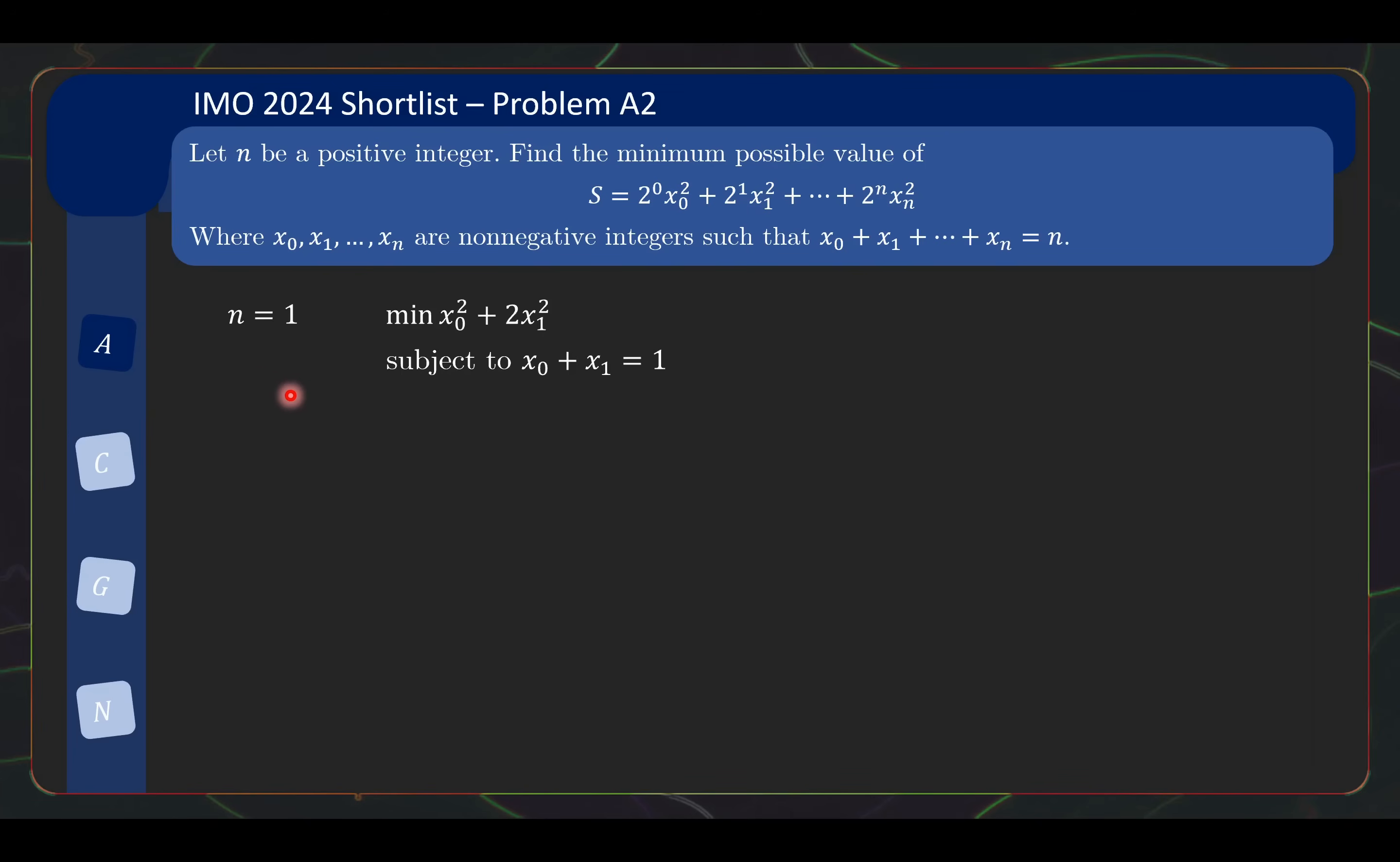When n=1, you have basically this problem. There's only two options: 1,0 or 0,1. You can just try both or remember that it must be non-increasing, so the answer is 1. For n=2, it looks like you have more options, but by the observations earlier, 2,0,0 or 1,1,0 are the only real candidates. You can try both - 1,1,0 is smaller, giving you a value of 3.